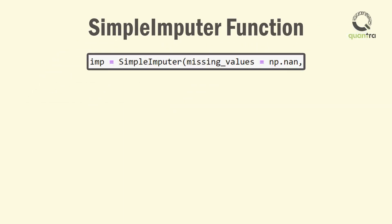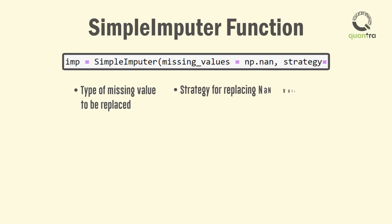The imputer function takes the first argument as the type of missing value to be replaced. In this case, we have represented NaN in this field. As we are looking to replace the non-numerical values, the next argument to be entered is the strategy to be used for replacing the NaN values.